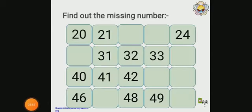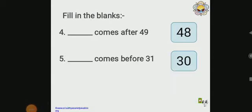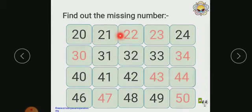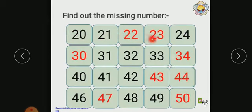Now children, find out the missing numbers. Here we have numbers from 20 to 50. You should write the missing numbers: 20, 21, and the next numbers are 22, 23, 24. In the second row, they've given 31, 32, 33. You should write 30 and 34.